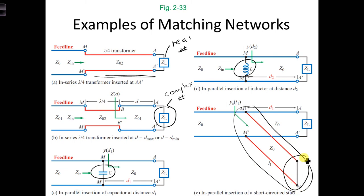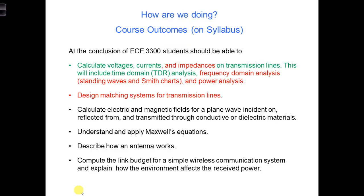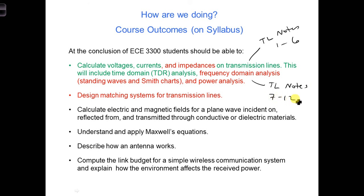It doesn't have to be a shorted stub — we looked at shorted, but it could be an open-ended stub. You could even put other circuit elements at the end of the stub. We're now done covering transmission lines and will be moving on next to wave propagation. I'm listing here the course outcomes for this class: highlighted in green are the topics we covered in transmission line notes 1 through 6, highlighted in red are the topics covered in transmission line notes 7 through 12, and the topics in black are ones we'll be covering soon.